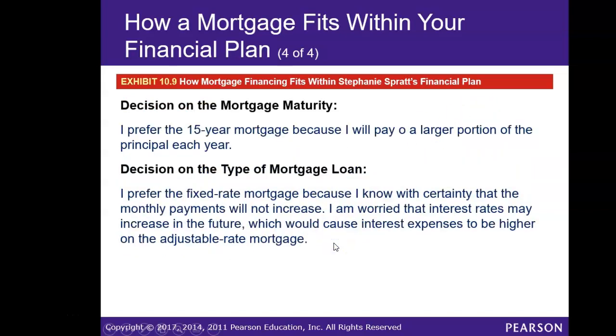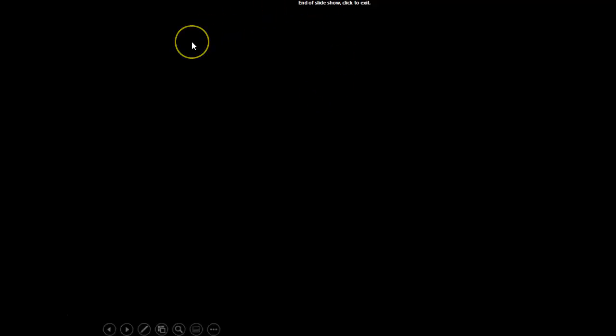The decision comes down to: do you want the shorter 15-year mortgage and save on interest, or the 30-year mortgage and pay more in interest? You also have another choice — you can take the 30-year mortgage but make extra payments when you have the income available, so you're not required to make the higher payment every month but can still reduce your balance faster. That really does conclude our chapter 10 lecture. Hopefully you'll take this information and use it when making a decision on the purchase of a home.